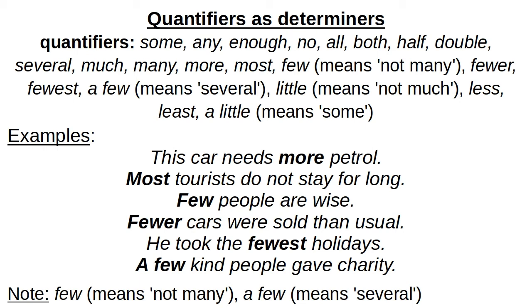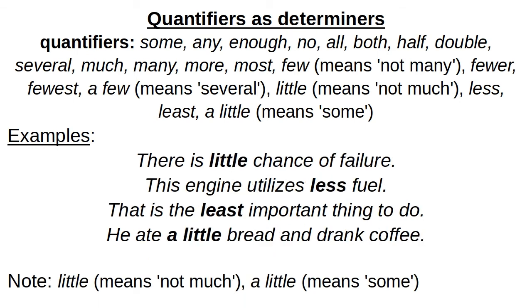Note: 'many' is used with countable nouns, whereas 'much' is used with uncountable nouns. 'This car needs more petrol.' 'Most tourists do not stay for long.' 'Few people are wise' — few means not many, so we can say 'not many people are wise.' 'Fewer cars were sold than usual.' 'He took the fewest holidays.' 'A few kind people gave charity' means several kind people gave charity. 'There is little chance of failure.' 'This engine utilizes less fuel.' 'That is the least important thing to do.' 'He ate a little bread and drank coffee.' Note: 'a little' means some; 'little' means not much.